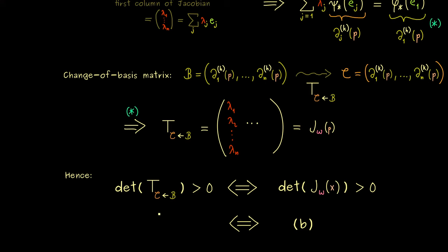While changing to another basis, we don't change the orientation, if and only if this determinant is positive. So you could say, this is a less abstract version of the statement described in A. Okay, and there we have it. We have proven that A is equivalent to B.